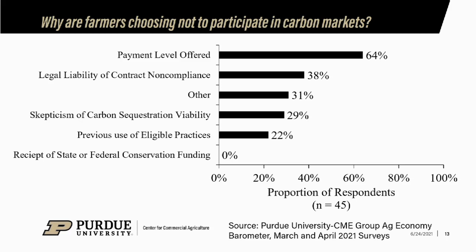We followed up and asked those who chose not to sign a contract why they weren't participating. The number one response was not enough money — the payment level simply wasn't high enough. Roughly almost two-thirds of respondents said it simply wasn't enough money. Some people were concerned about legal liability, and a wide range of other considerations came up. Some were skeptical about carbon sequestration as a longer-term thing. About one out of five said they were ineligible because they were already doing those practices like conservation tillage, no-till, or cover crops — and because of the additionality principle, they weren't eligible.